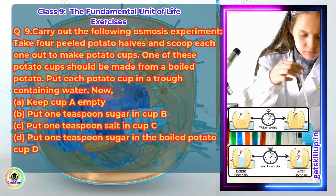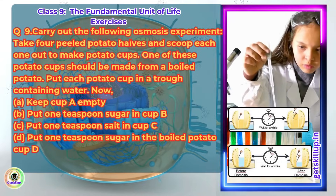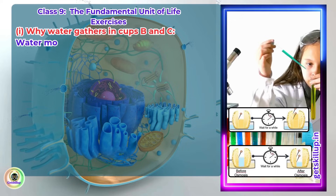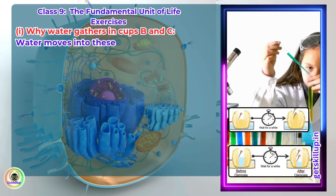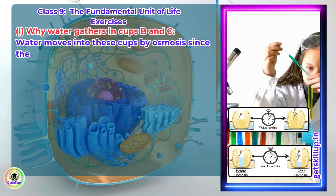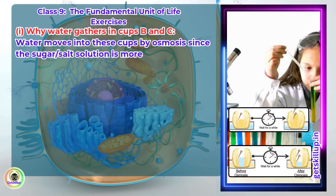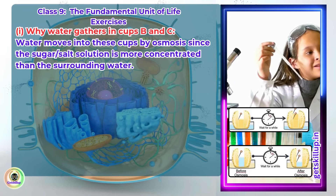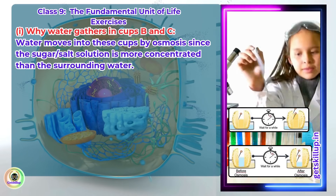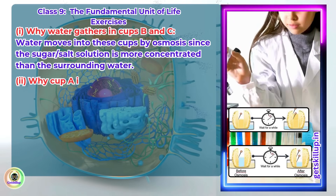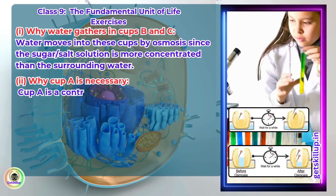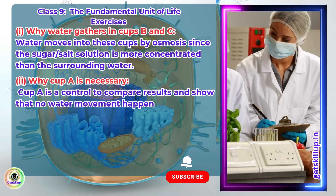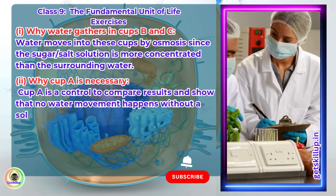Observe the 4 potato cups and answer the following. Explain why water gathers in the hollowed portion of B and C. Water moves into these cups by osmosis since the sugar or salt solution is more concentrated than the surrounding water. Why is potato A necessary for this experiment? Cup A is a control to compare results and show that no water movement happens without a solute.